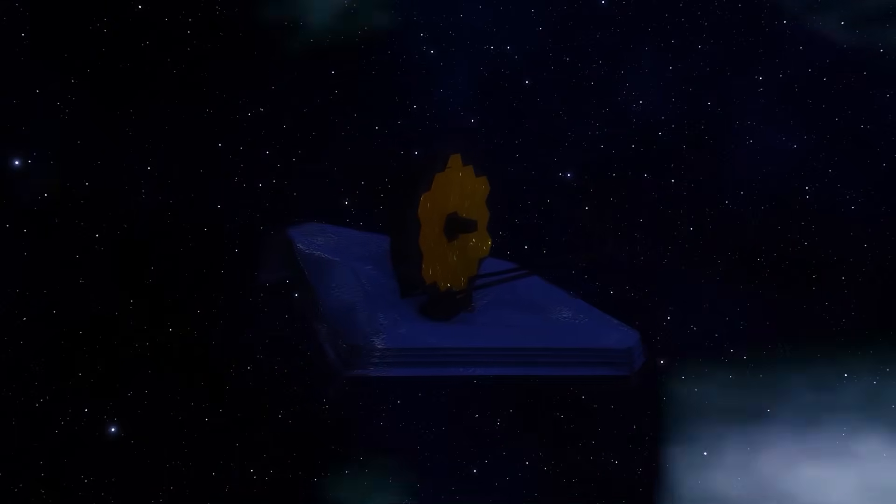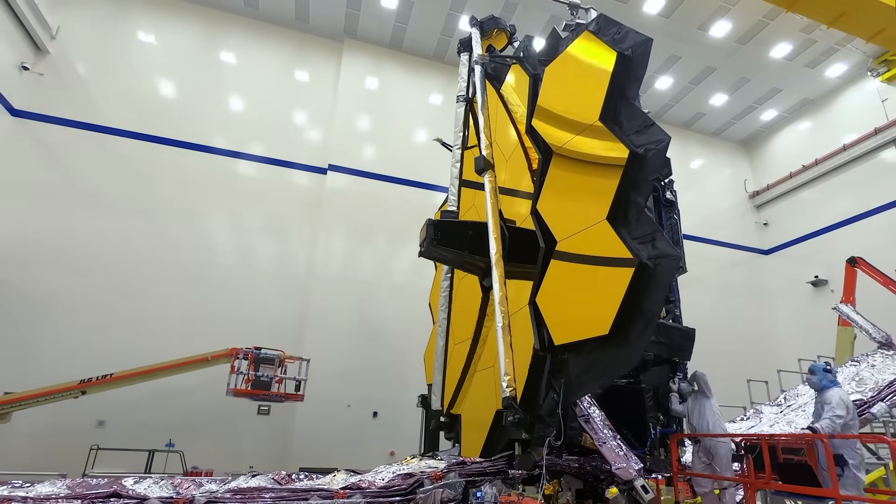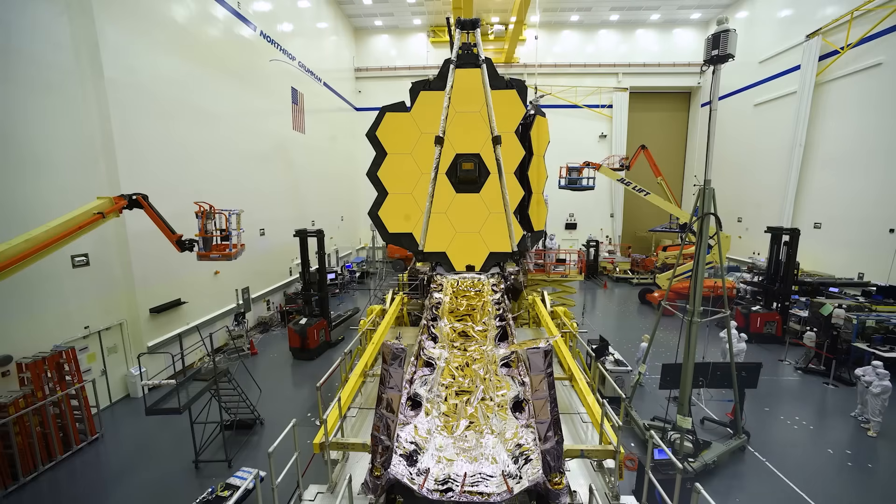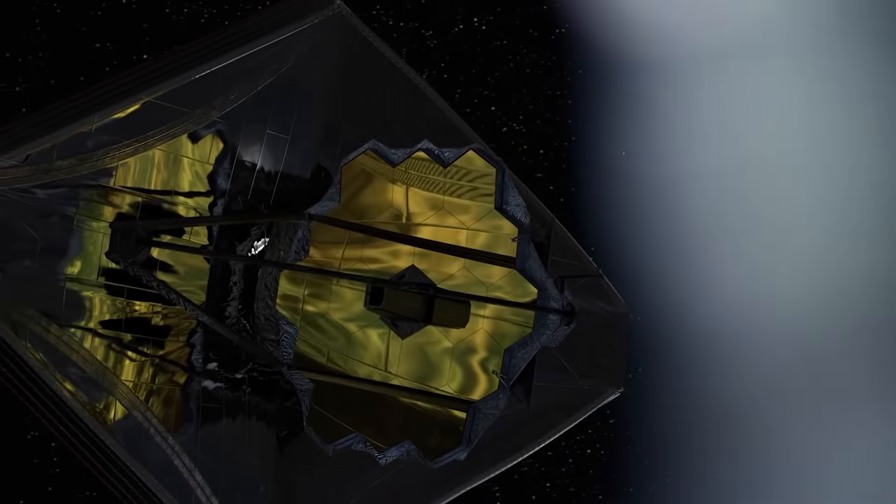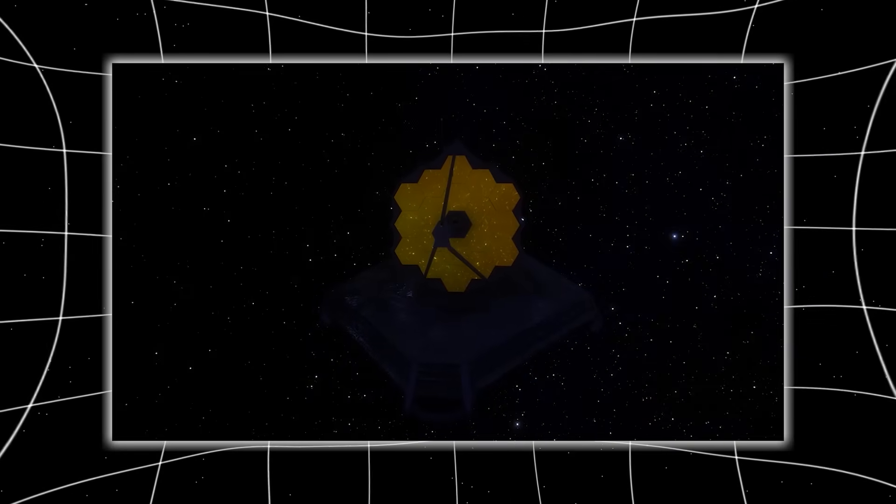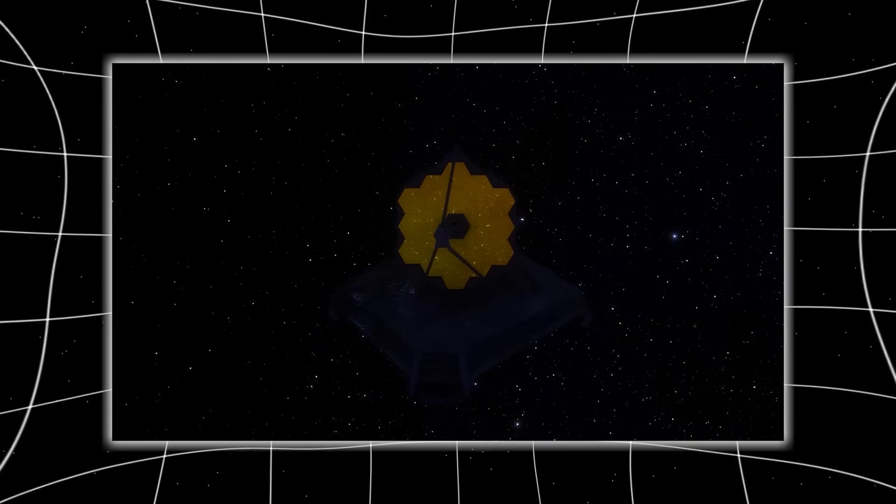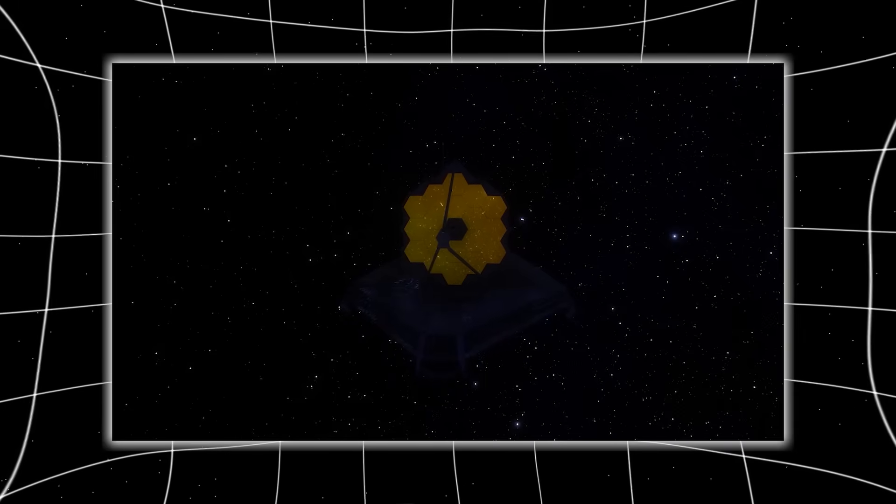We taught these principles in classrooms. We programmed satellites with them. We even used them to predict the fate of our universe. But when the James Webb Space Telescope pointed its ultra-sensitive eye into the most ancient corner of the cosmos, it didn't find confirmation. It didn't find comfort.